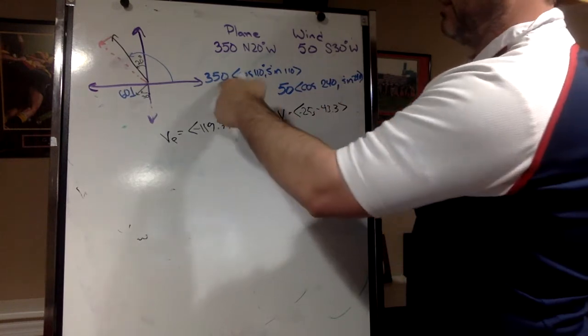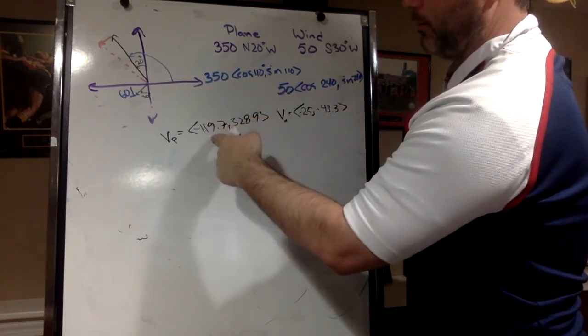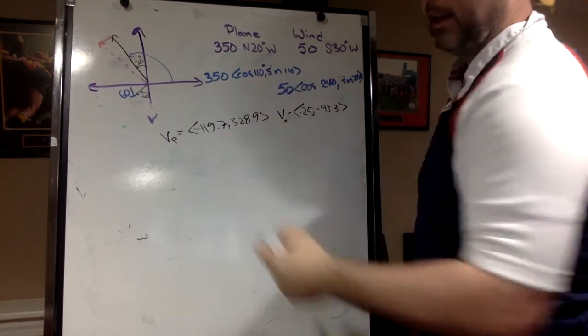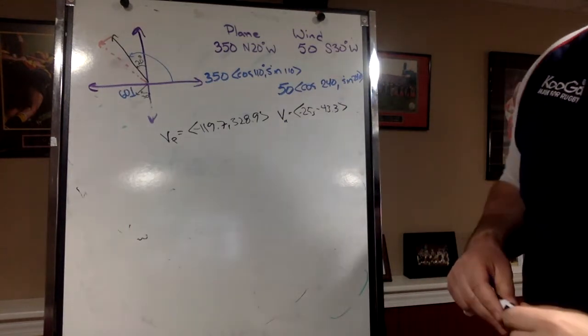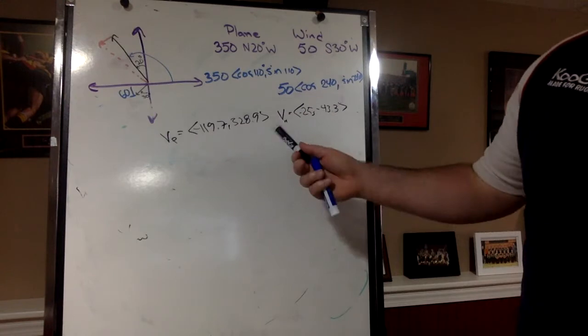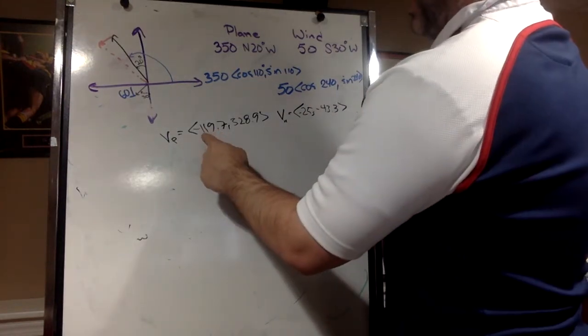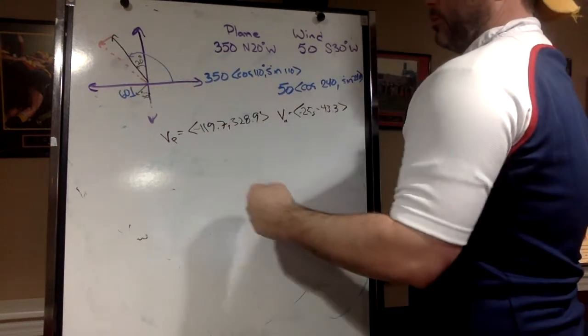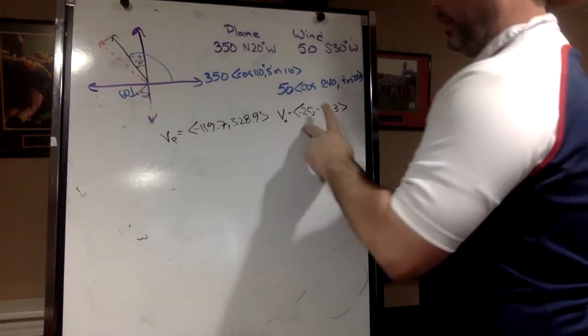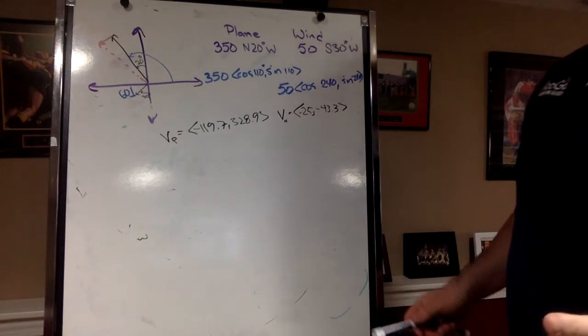And remember how I did that? Did 350 times cosine of 110, then 350 sine. Again, make sure you're in degree mode. Okay, now also let's check - why do we see some negatives? That's a negative and that's a positive because we're in quadrant two - x's are negative, y's are positive. The wind is quadrant three - both negative.